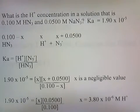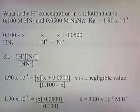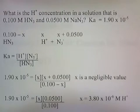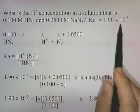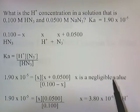What is the H+ concentration in a solution that is 0.100 M HN3 and 0.0500 M NaN3? Ka = 1.90 × 10^-5.